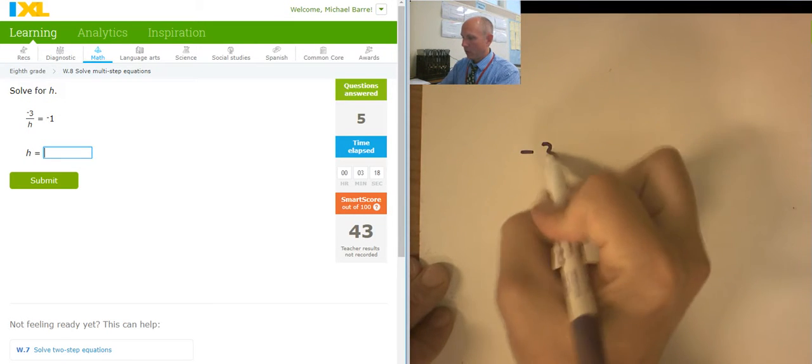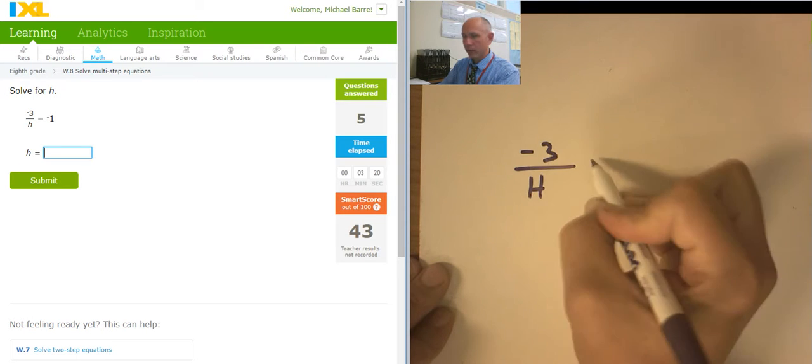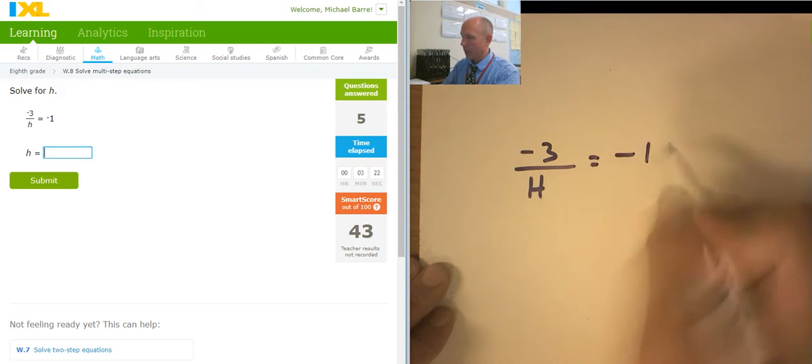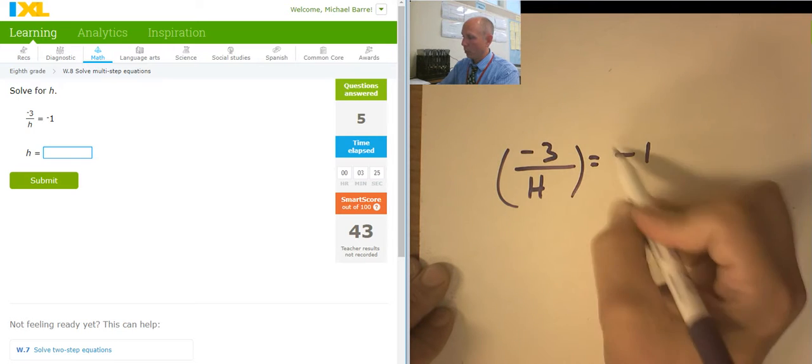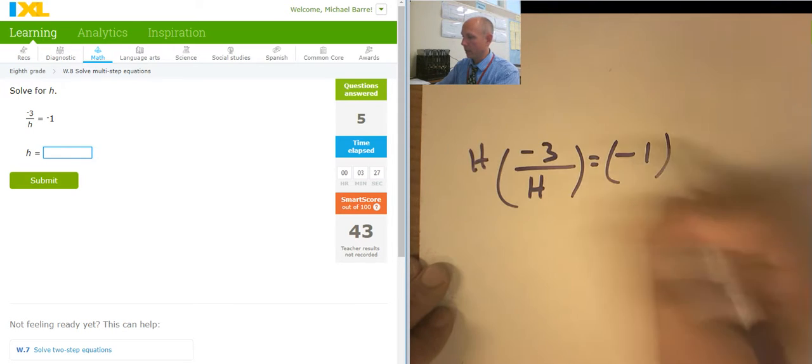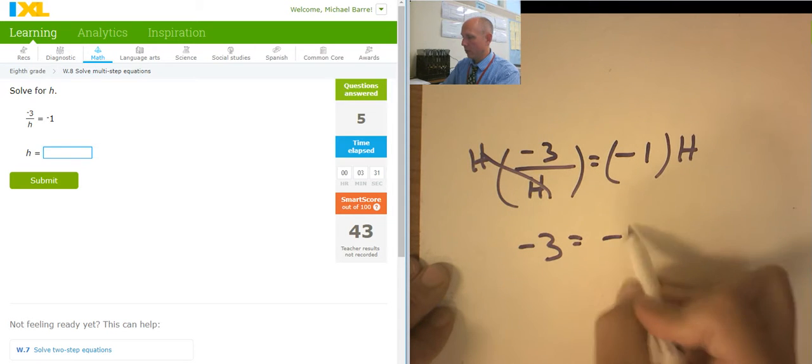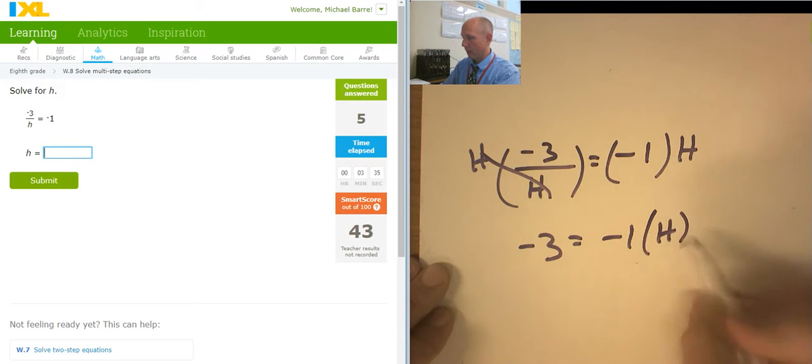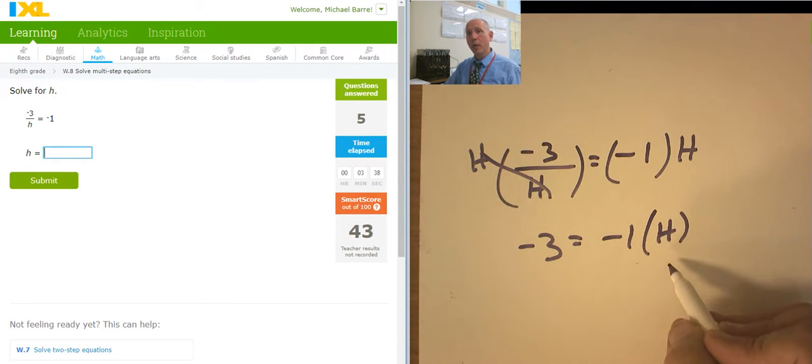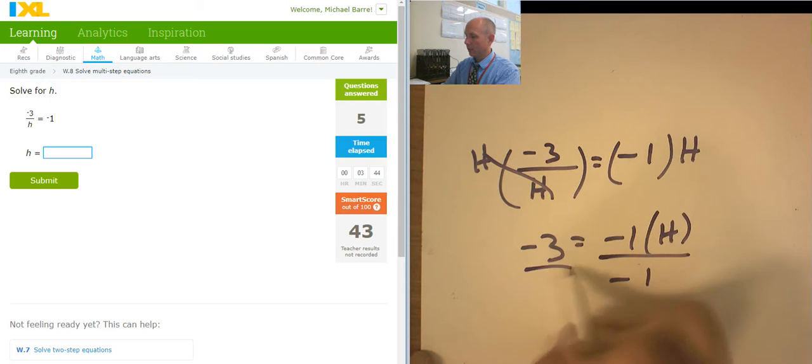Negative 3. Oh, interesting. Over h equals negative 1. It starts its life as a fraction. So I'm going to put it in parentheses and multiply both sides by the denominator. So I have negative 3 equals negative 1 times h. Who's the variable? h. Who's bugging it? Negative 1. What's it trying to do? Multiply. How do I undo multiplication? Division. I'm going to divide both sides by negative 1. Negative 3 divided by negative 1 is a positive 3.